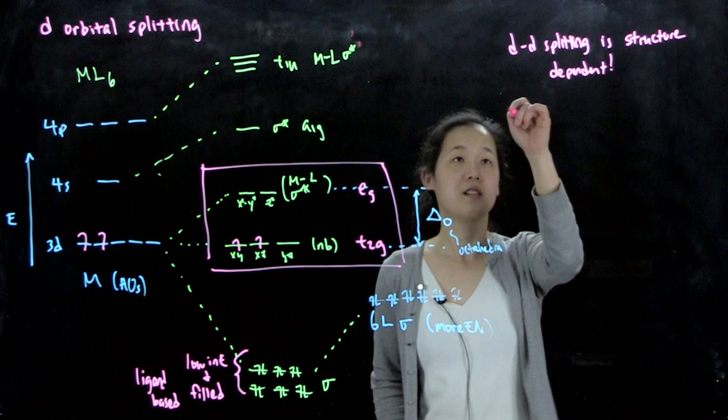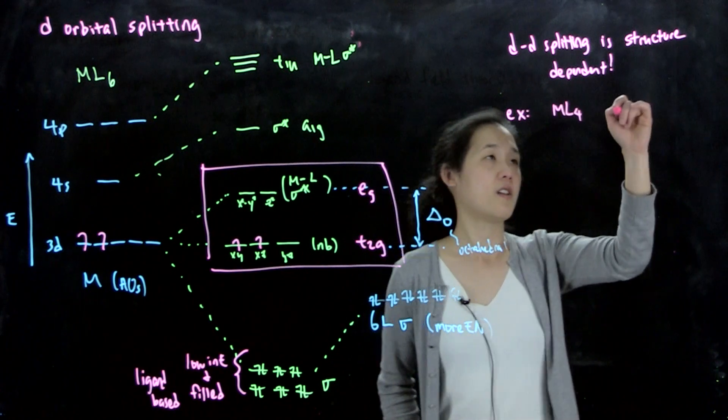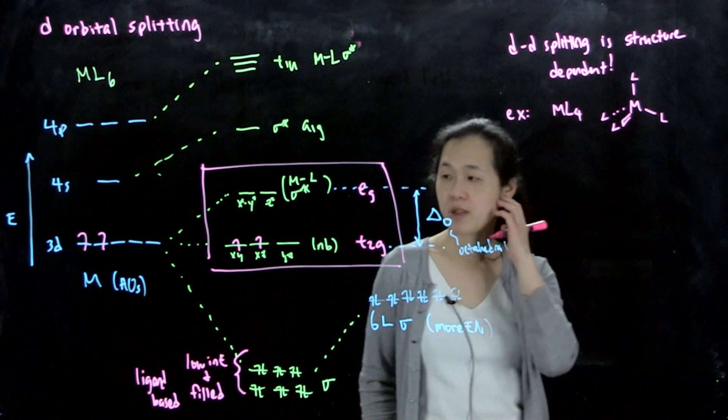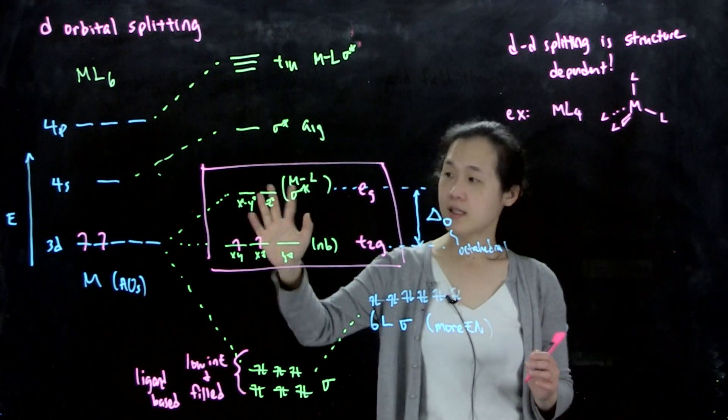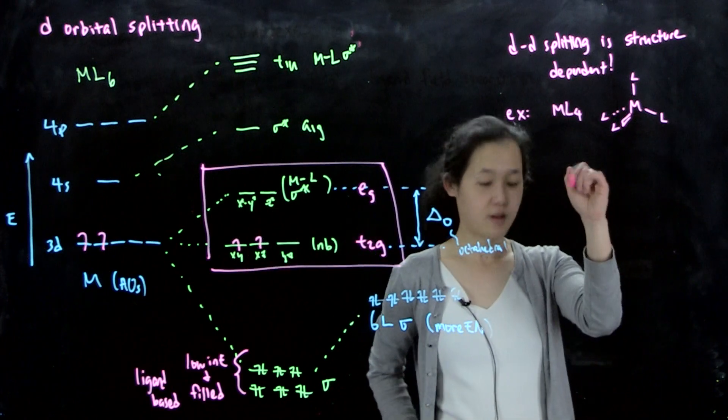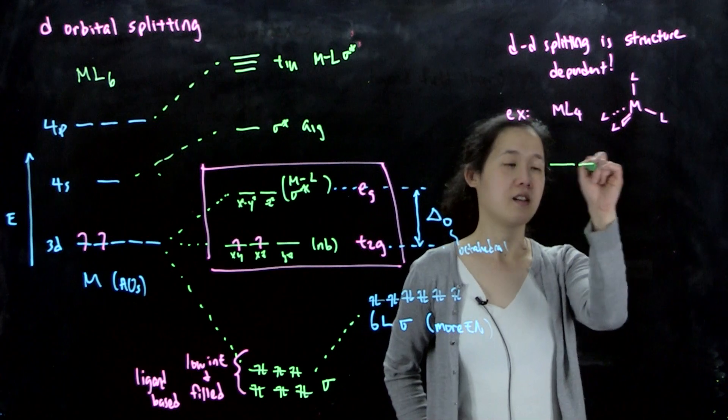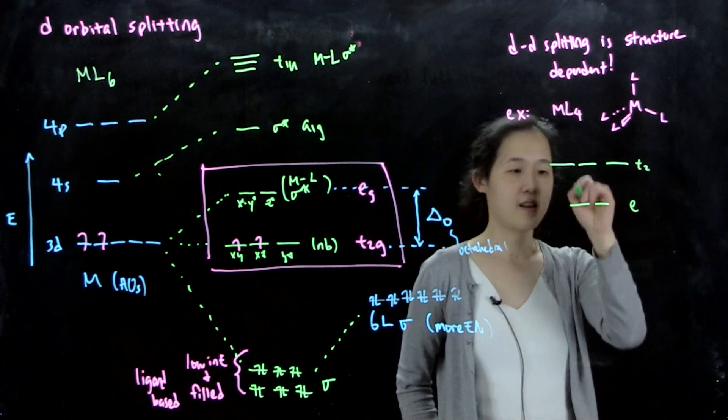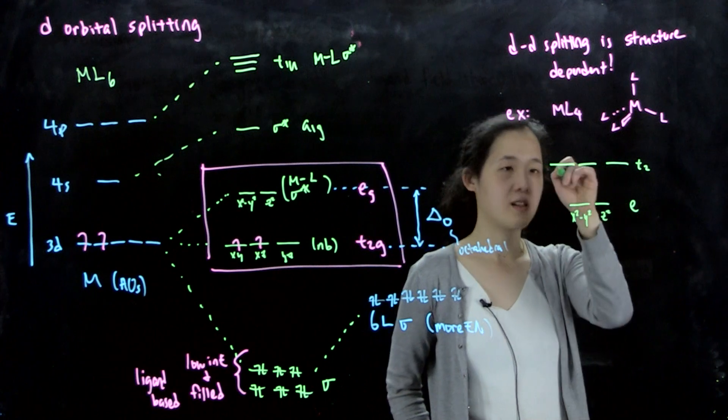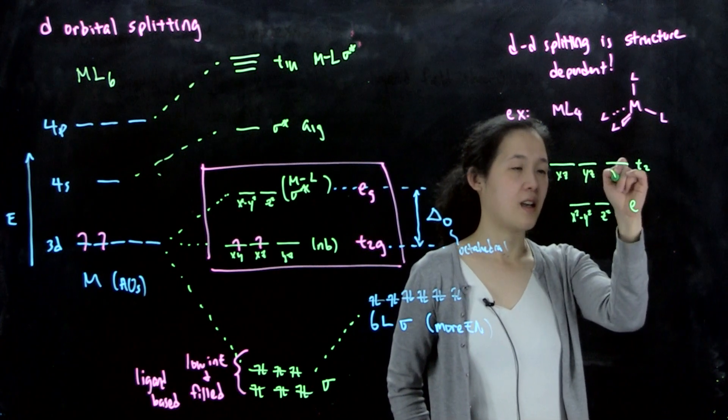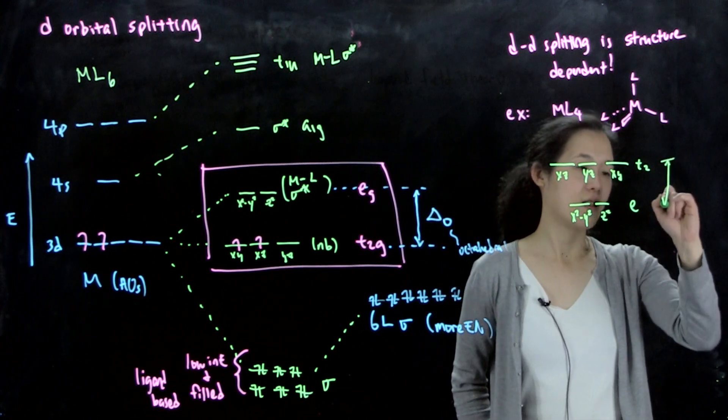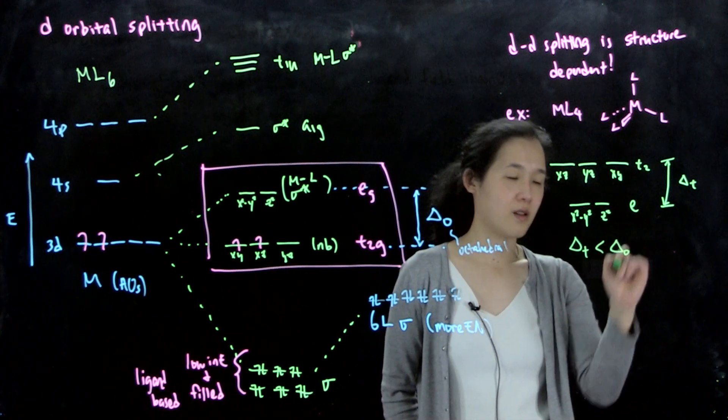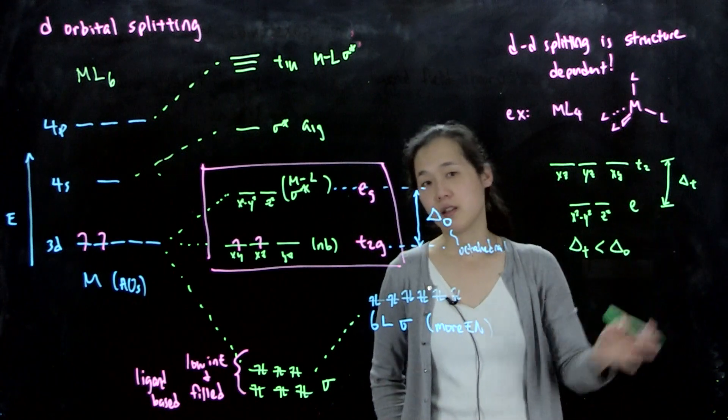For tetrahedral, we get a different d-orbital splitting pattern. We have our bonding and antibonding the same, but this manifold, our five d-orbitals, are split like so. This is now E, and this is T2. These are our x squared minus y squared, dz squared, xz, yz, xy. This splitting over here is now delta T. Usually delta T is smaller than delta O because of the number of ligands and just the nature of the orbital interaction.